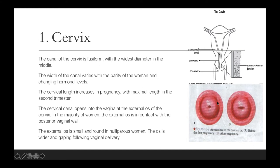In the majority of women, the external os is in contact with the posterior vaginal wall. The external os is small and round in nulliparous women, whereas the external os of a multiparous woman is wider and gaping because of vaginal delivery.